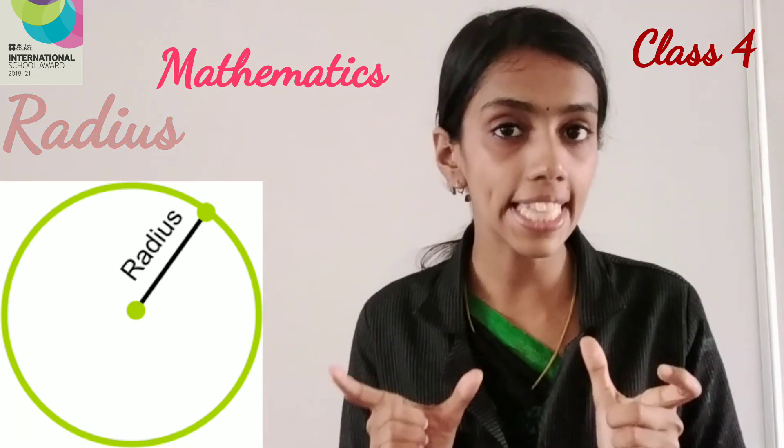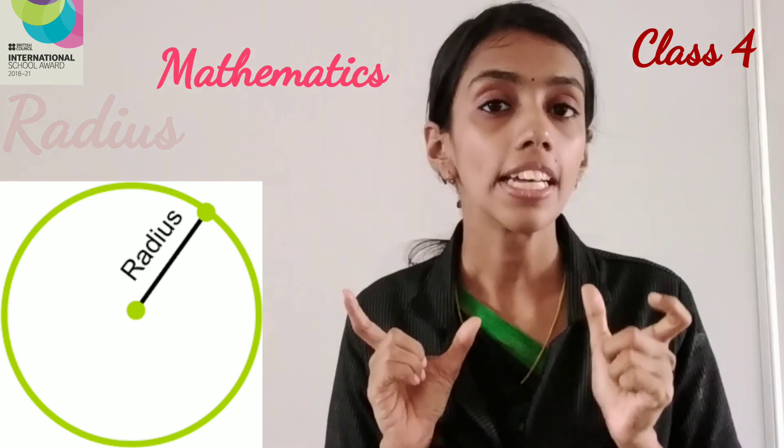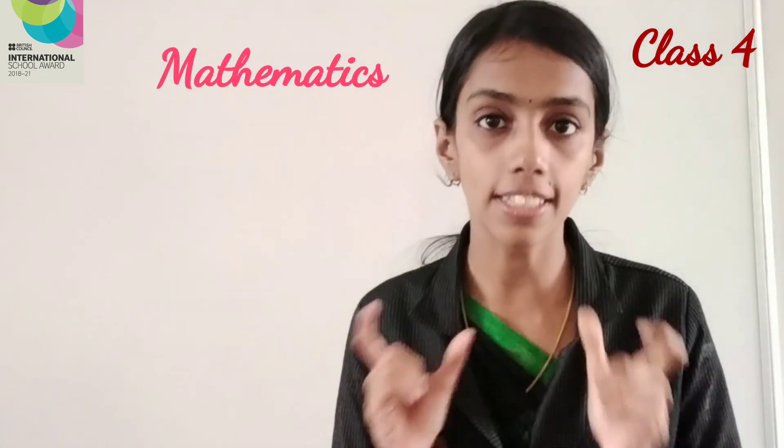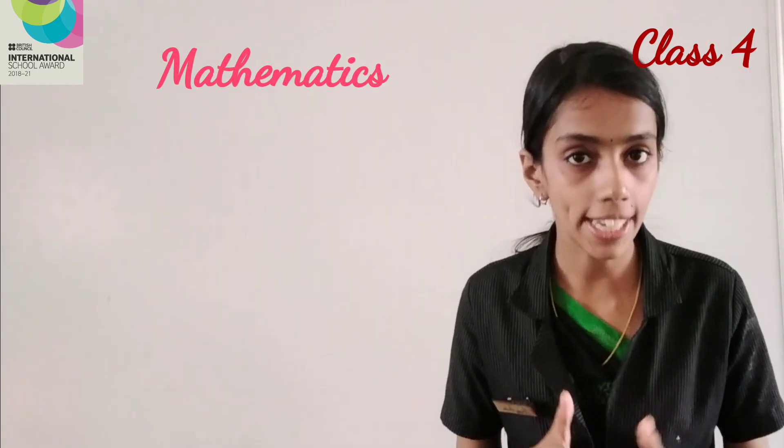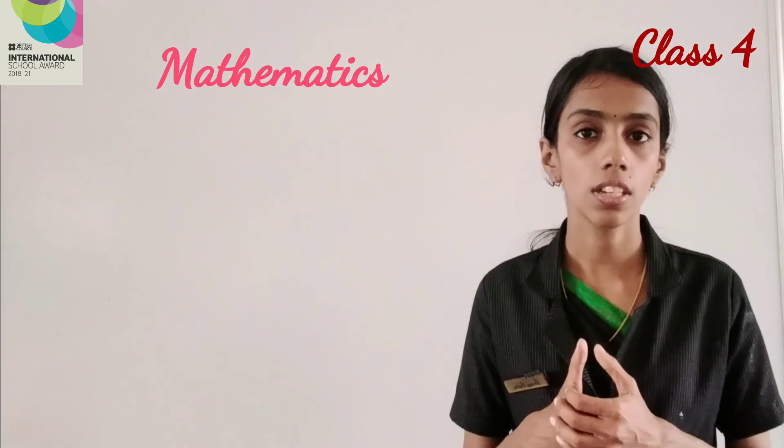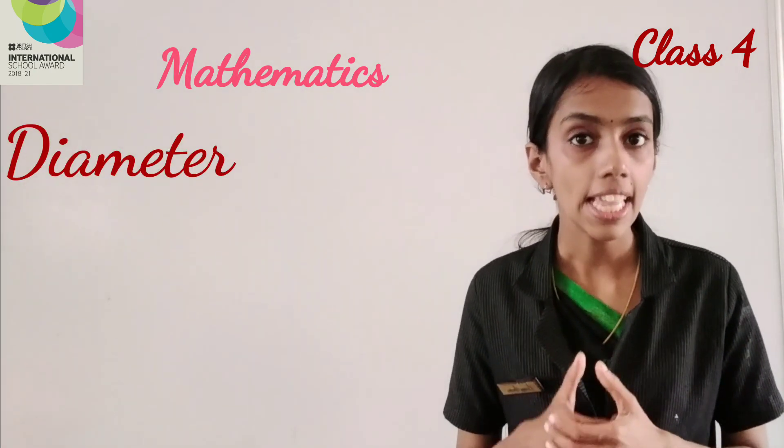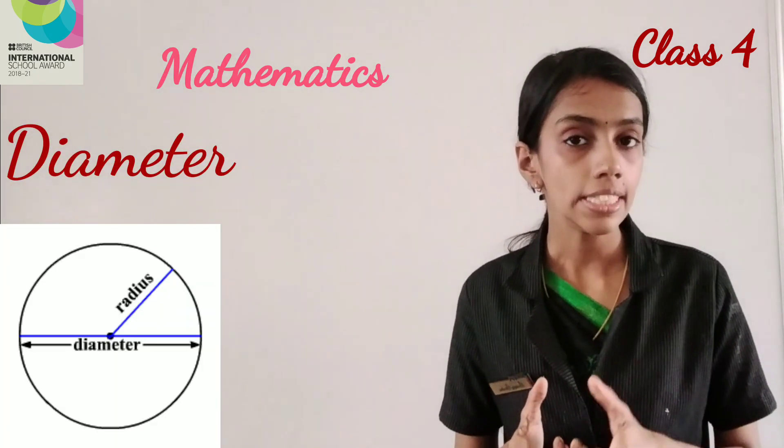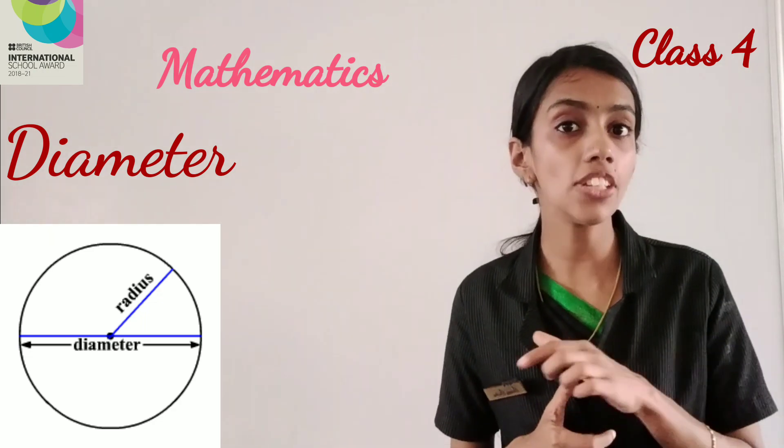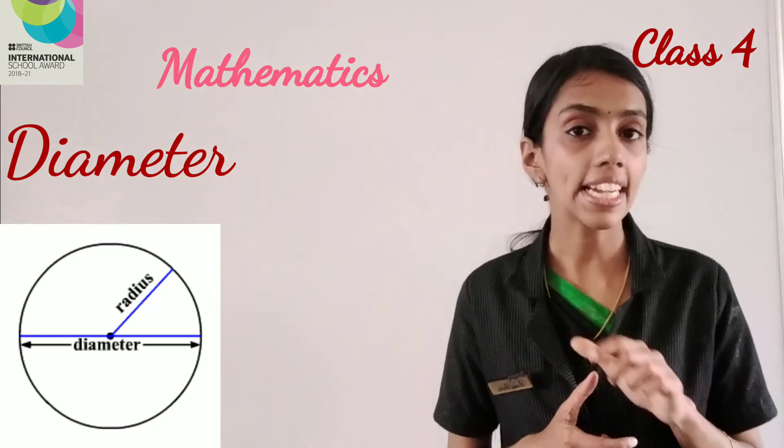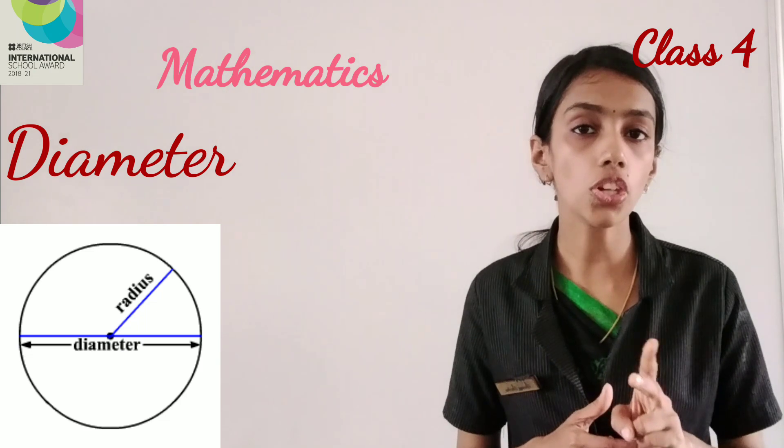Radius: The radius of the circle is the distance from the center of the circle to any point on the circle. Diameter is the line segment that passes through the center of the circle, connecting two points on the circle.